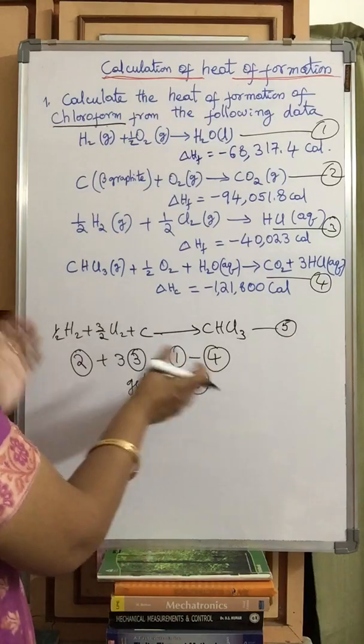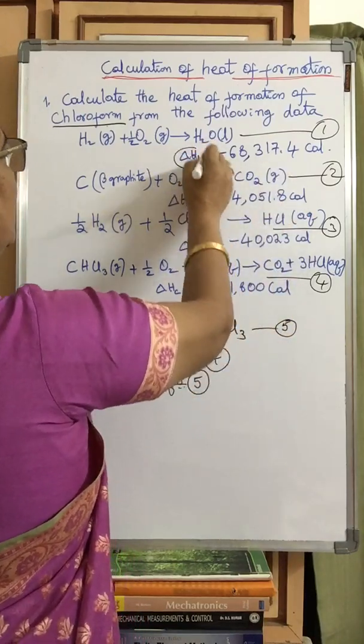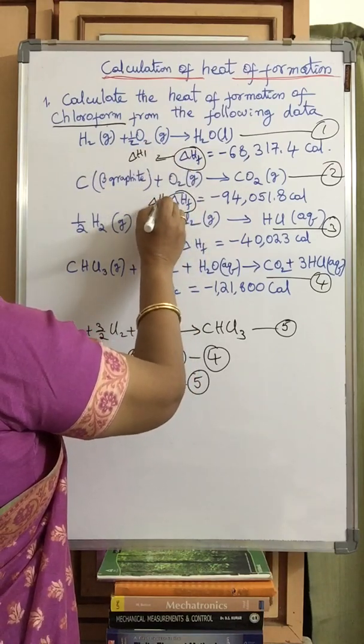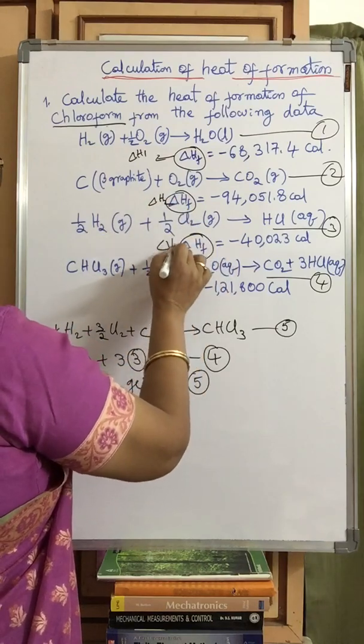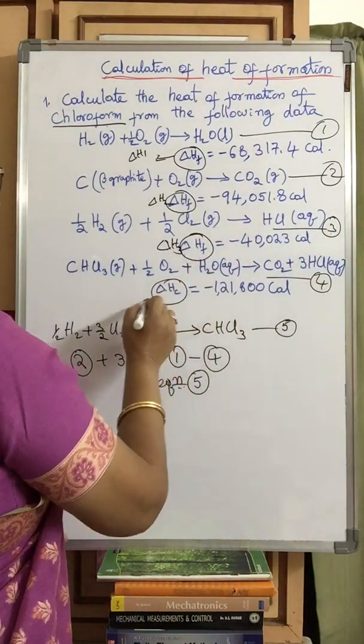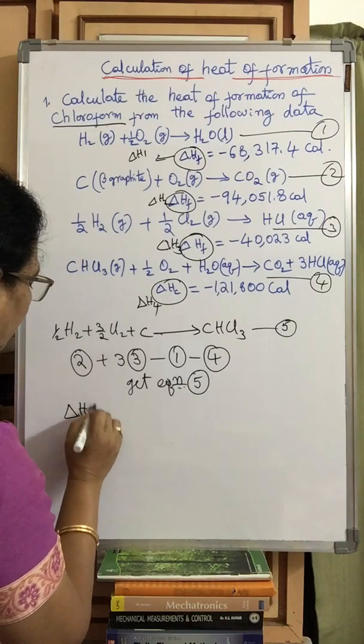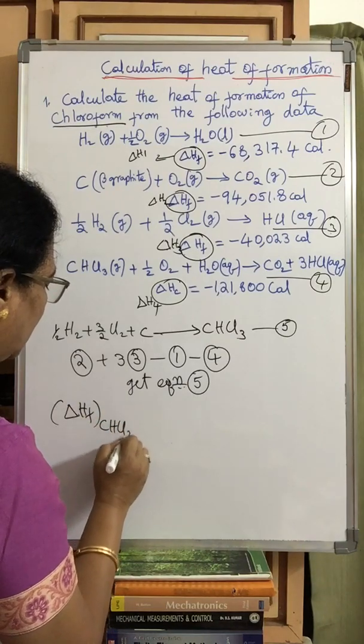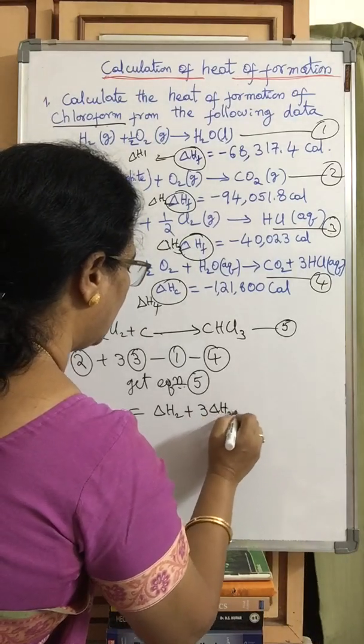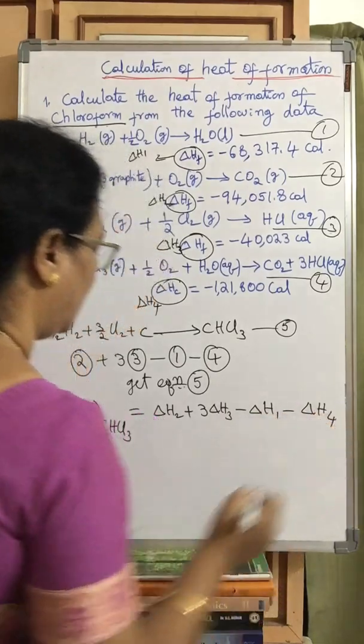Whichever way we are doing this manipulation, the same manipulation must be done for the delta H also. This is delta H1, this is delta H3, this is delta H4. So heat of formation of chloroform CHCl3 is equal to delta H2 plus 3 into delta H3 minus delta H1 minus delta H4.